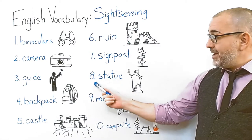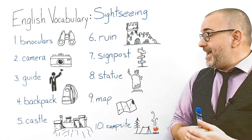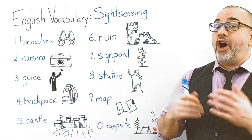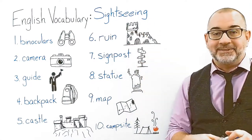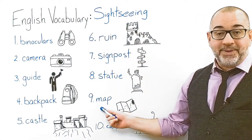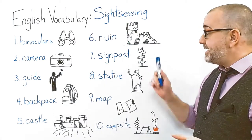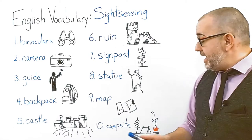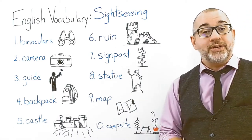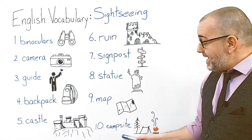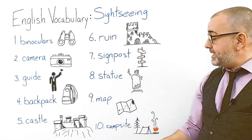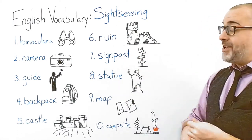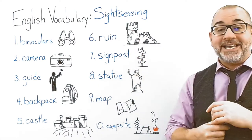Number eight is statue. A statue is a monument of a person or a thing that you will often see sightseeing. Number nine is map. Like a signpost, a map can help you find something if you're lost or don't know where to go. And our last word relating to sightseeing is campsite. Maybe on a long sightseeing tour you will sleep outside in a campsite.